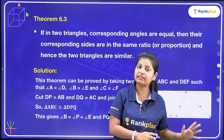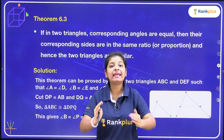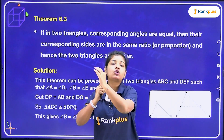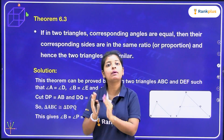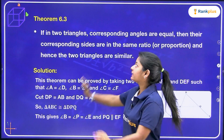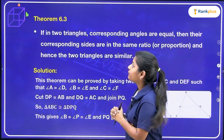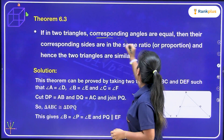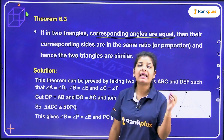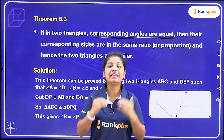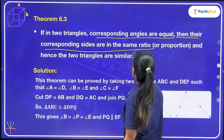Theorem 6.1 we have already covered. Theorem 6.3 is for similar triangles. This theorem says: if in two triangles, corresponding angles are equal, then the ratio of their corresponding sides will be the same.